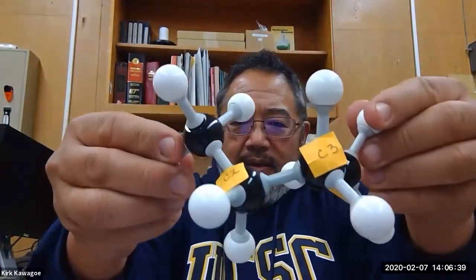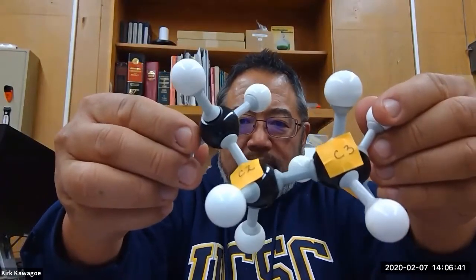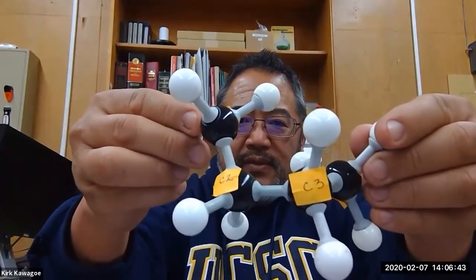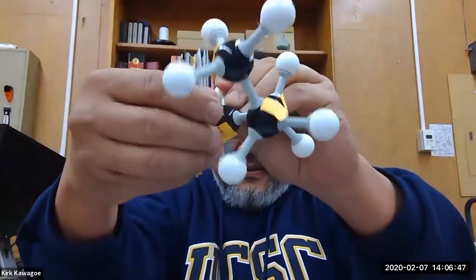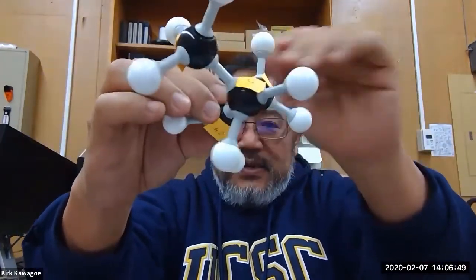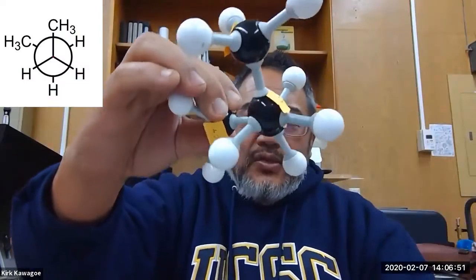So this is what we're dealing with when we're dealing with the Newman projection. This is butane and I'm going to look down C2, C3 so I'm going to turn that towards the camera like that. And now I have C1 straight up in the front.